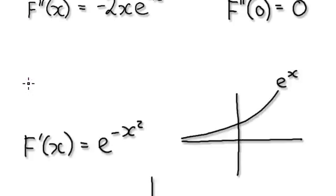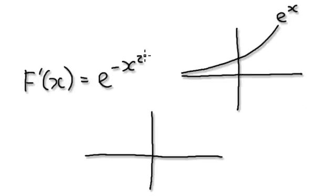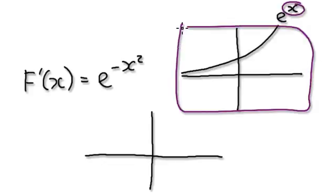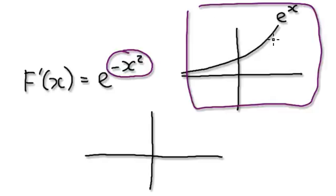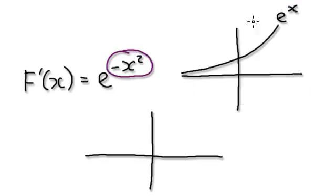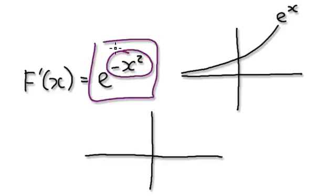Analyzing that — remember that the normal e to the power of x graph looks like this. So here you've got e to the power of something, so just bear in mind that e to the power of x looks like this. Now let's try and look at this.